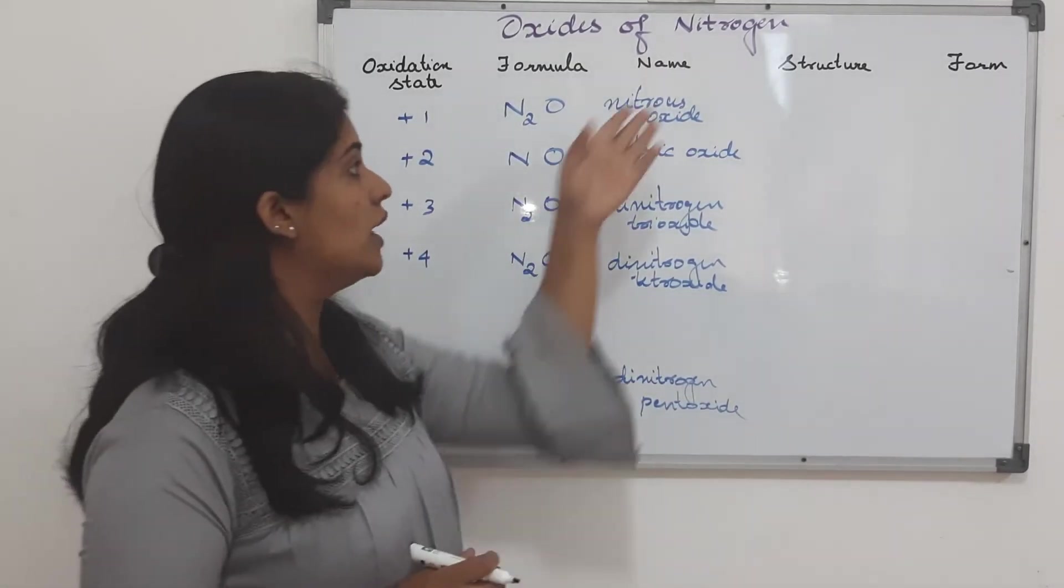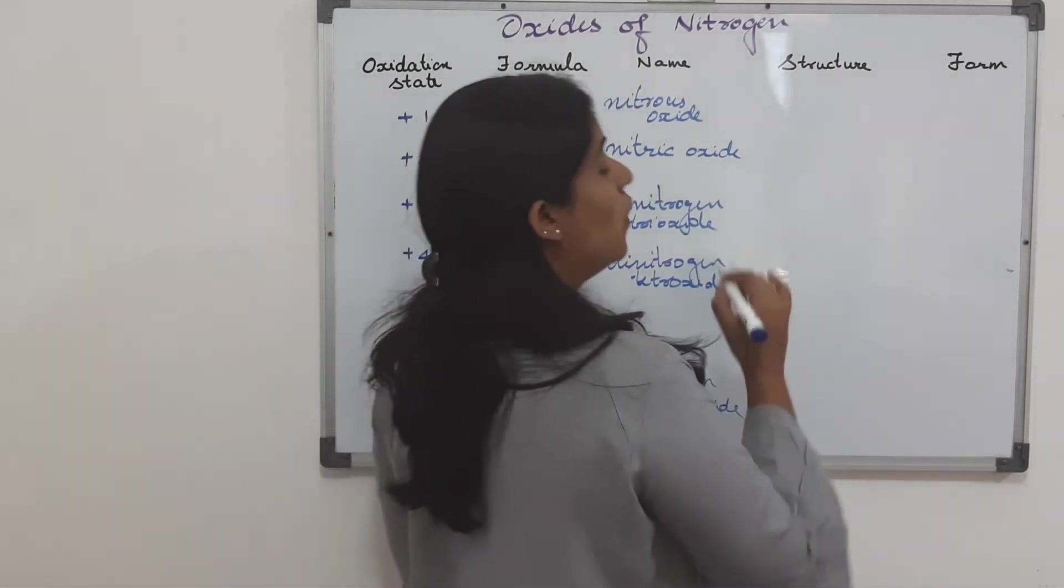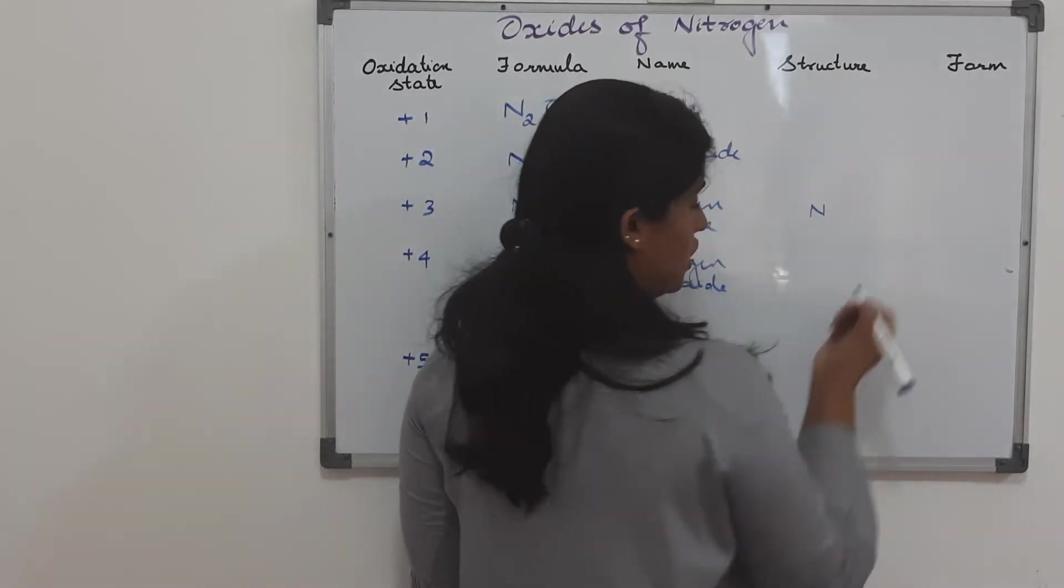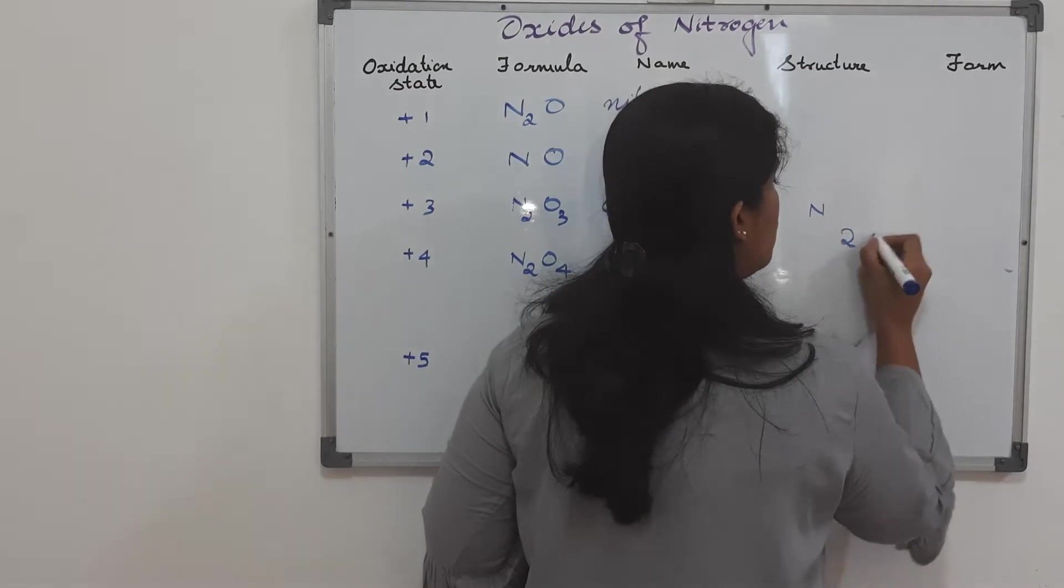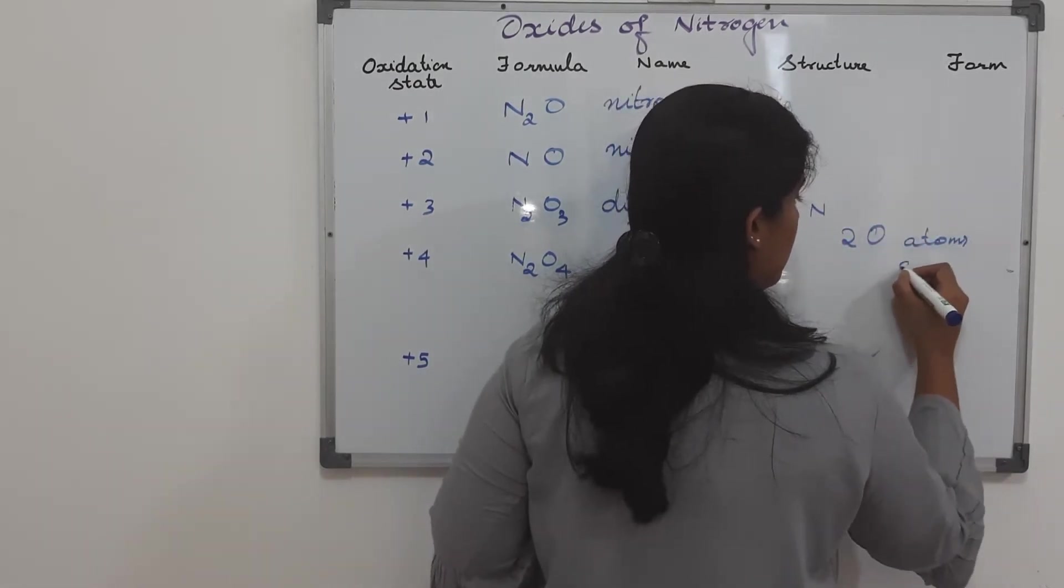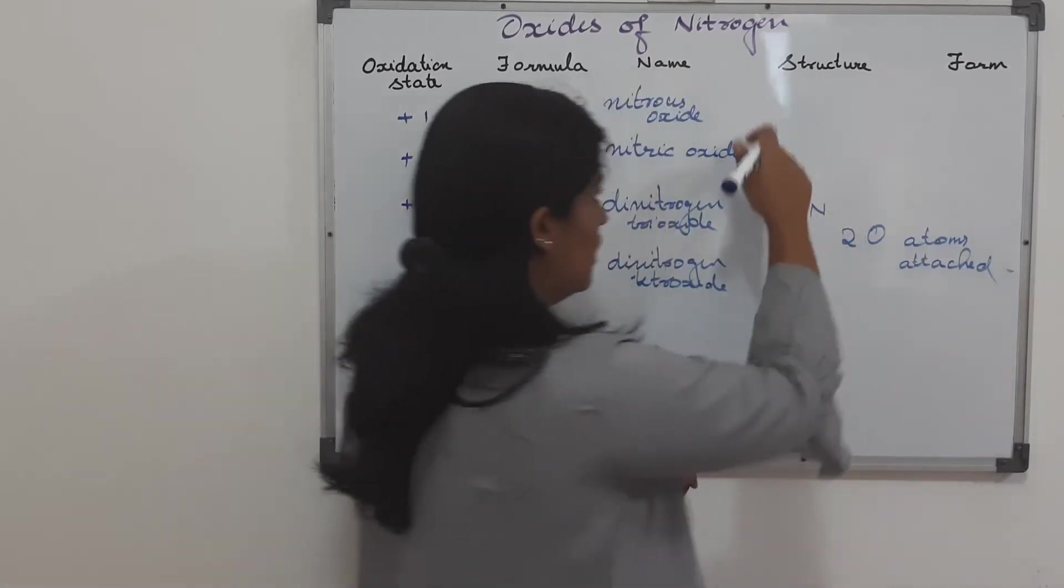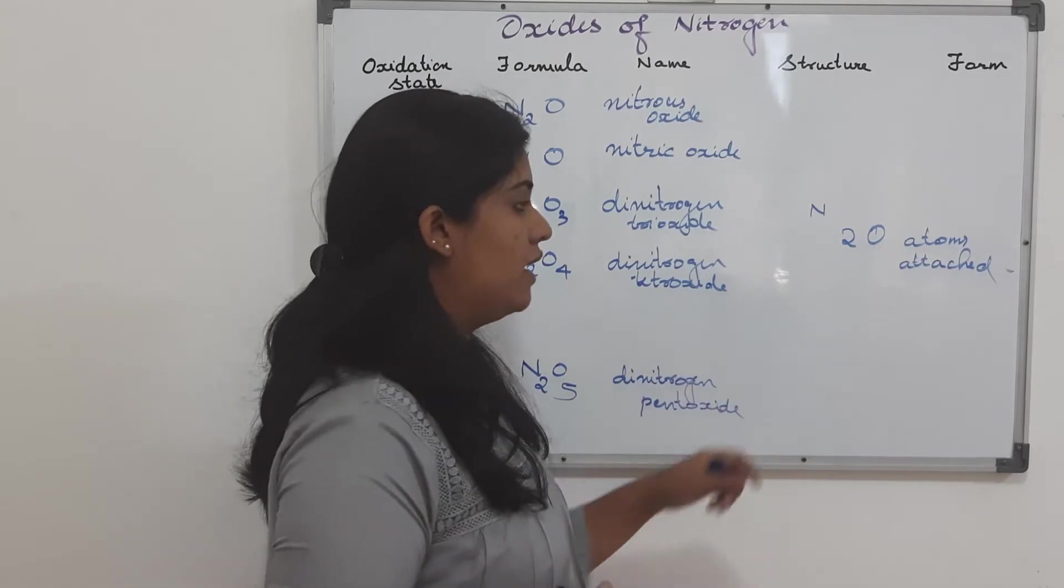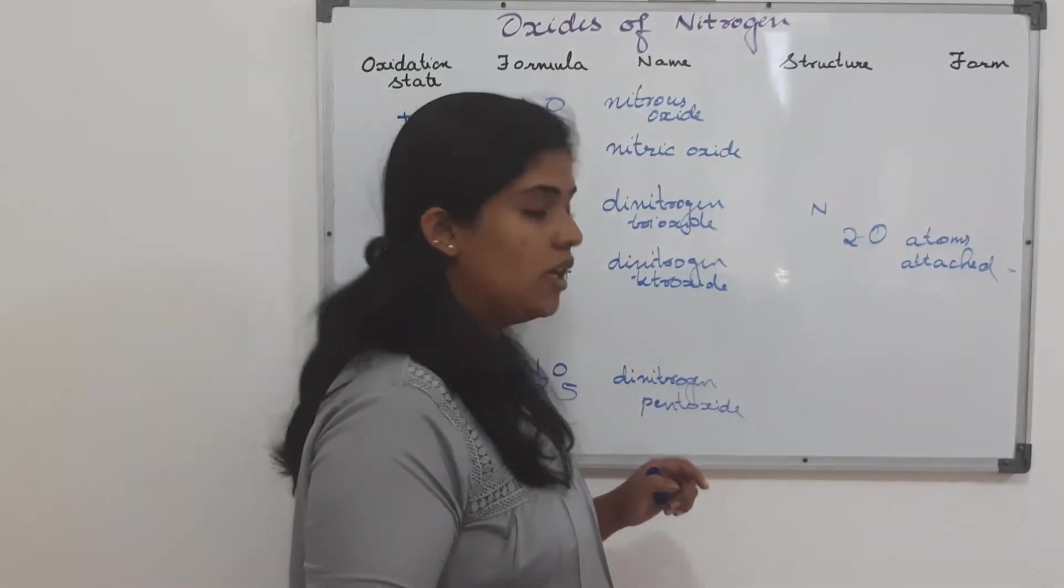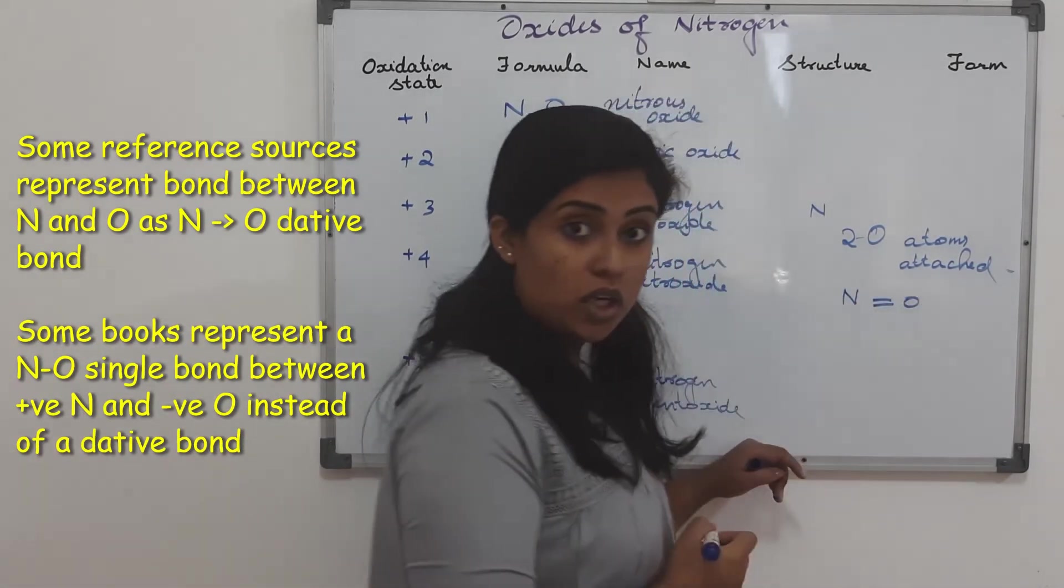Now, we move on to the structure of each of them. So, the structure means, what you have to remember in this is, every nitrogen can have a maximum of two oxygen atoms attached to it. All these structures, if you look, you will find that every nitrogen has a maximum of two oxygen atoms attached to it.